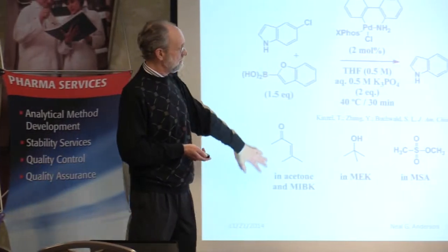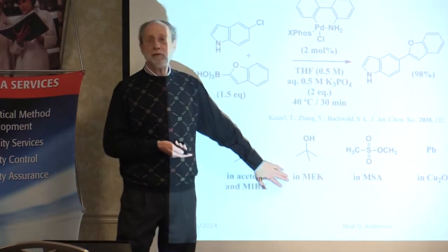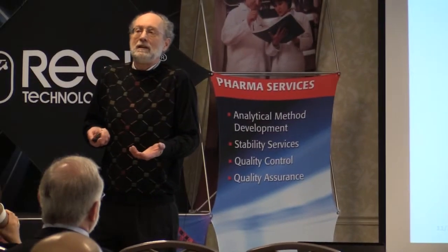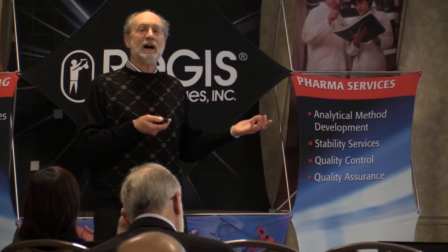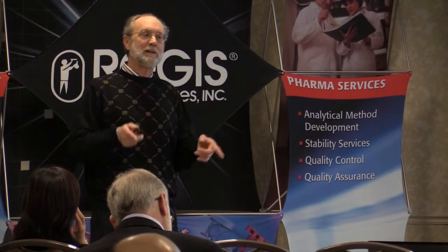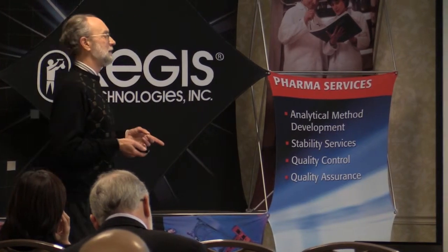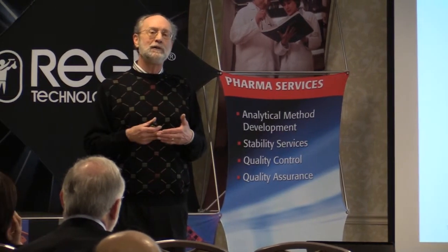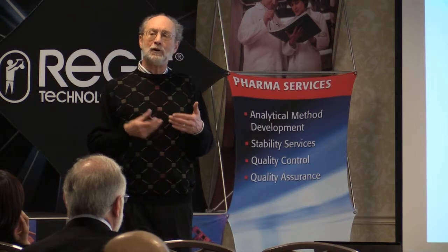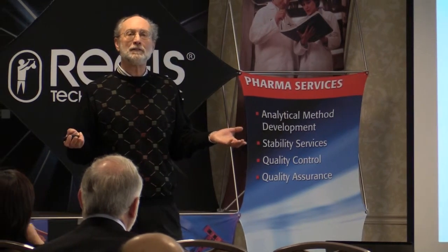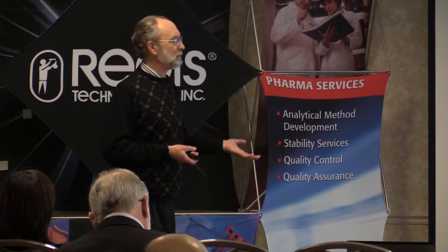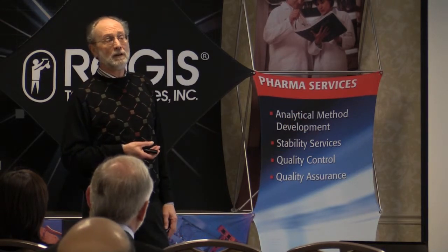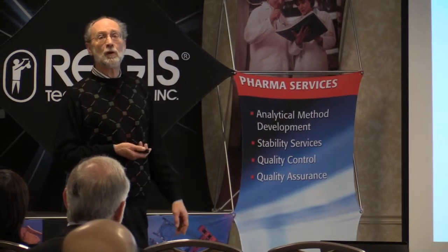In acetone or MIBK, watch for mesityl oxide. In methyl ethyl ketone, there's a small amount of t-butanol. T-butanol is actually more toxic than you might expect if you look at the toxicity data in the literature. Why would t-butanol be around in methyl ethyl ketone? Because of how it's generated in the gas phase — methyl ethyl ketone is eventually generated from isobutylene. So this is something that would occur.